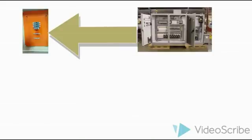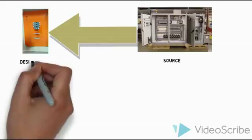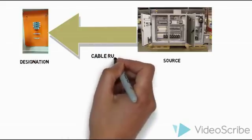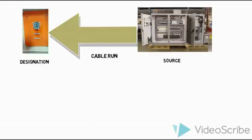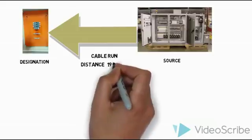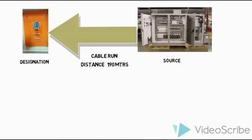The supply came from main source panel to designation panel, so we run some cables for joining these two panels. How many meters are we going to use for connecting the two panels, source to designation? Here 190 meters we can use to connect these two panels. This is the distance of cable.